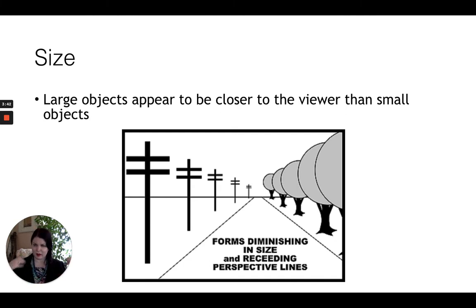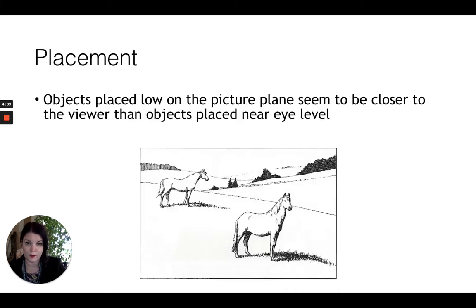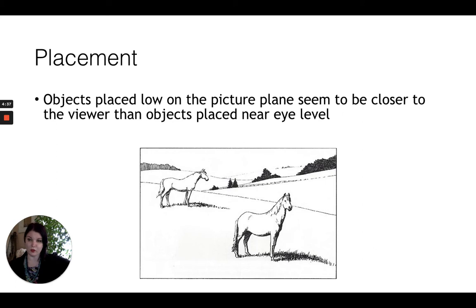Large objects appear to be closer to the viewer than small objects. When we're working on perspective — especially in one point perspective — forms diminish in size as they move toward the vanishing point or toward the horizon line. Objects placed low on the picture plane seem to be closer to the viewer than objects placed higher, more near eye level. The closer you get to that horizon line, the further back something appears to be in the picture plane.